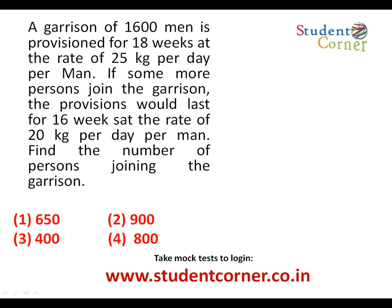A garrison of 1600 men is provisioned for 18 weeks at the rate of 25 kg per day per man. So 1600 men, each eating 25 kg per day, for 18 weeks — that is the total quantity they are having. If some more persons join the garrison, the provisions would last for only 16 weeks at the rate of 20 kg per day per man.